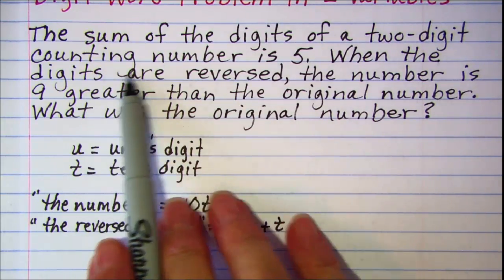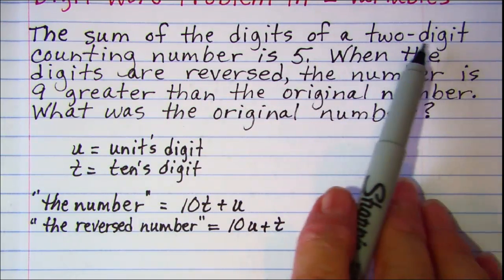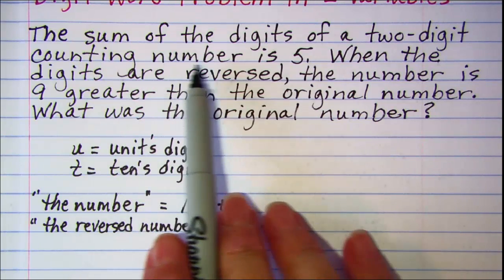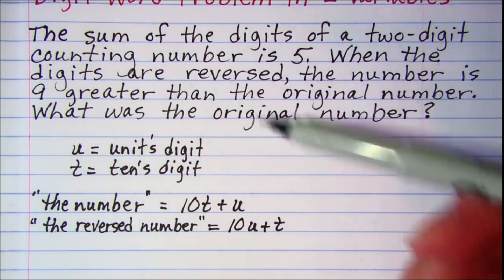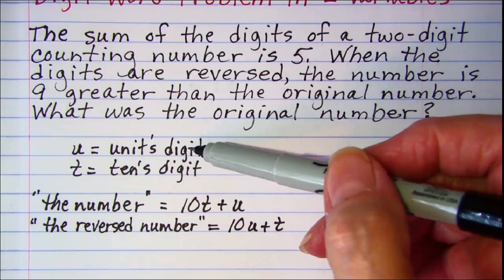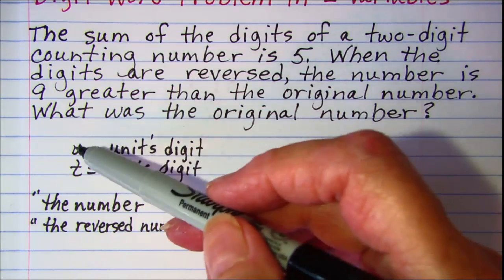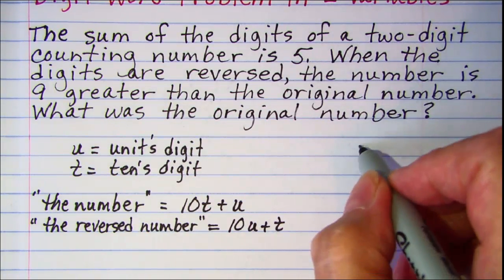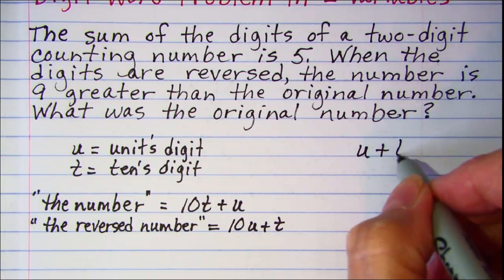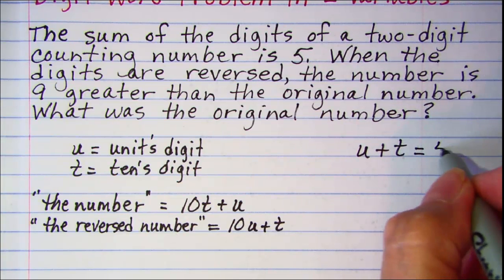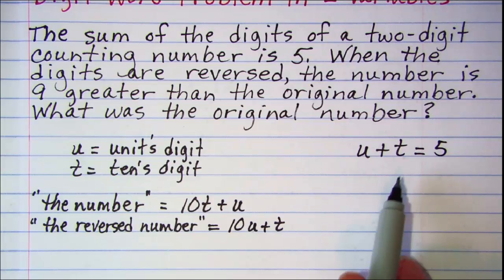Alright, the sum of the digits of a two-digit number is 5. So, now we're just using these digits and it says the sum, so we're going to add those together. And that sum is 5. So, this is one of our equations.